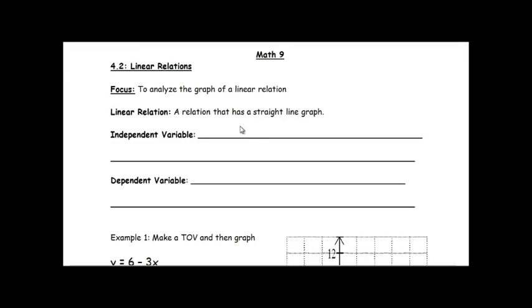Math Nines, welcome back. In this video, our focus will be to analyze the graph of a linear relation. A linear relation is just a relation that has a straight line graph, so all of the things that we graph should end up being a straight line.